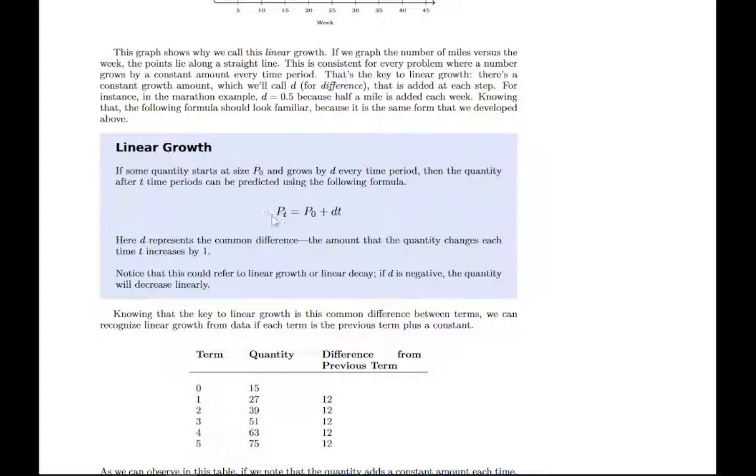It's important that you recognize the pieces. P sub t is the population in the future. P naught is the initial population, the initial amount of whatever we're measuring. Then d is the amount that it increases or decreases every time you take a step forward in time. If you're measuring time in weeks, d would be how much it changes every week. d can be positive if it's growing or negative if it's shrinking. And t stands for time.